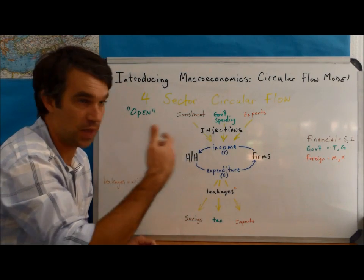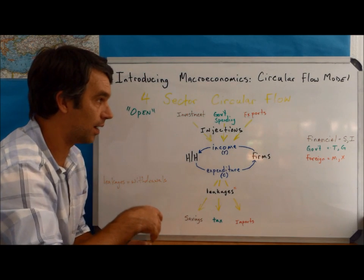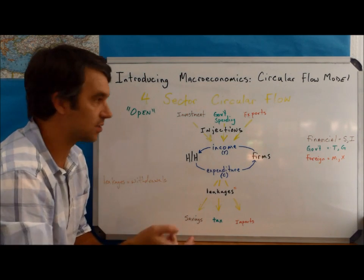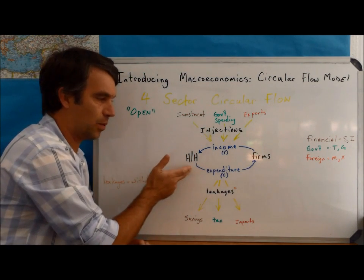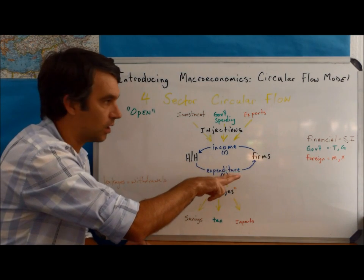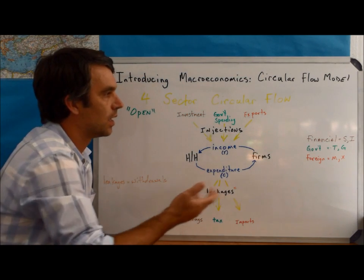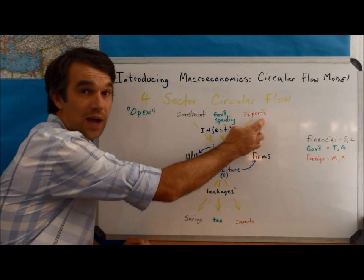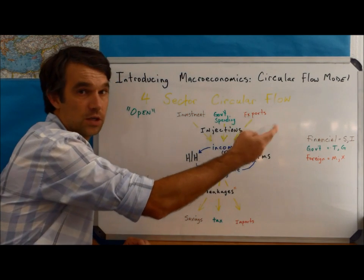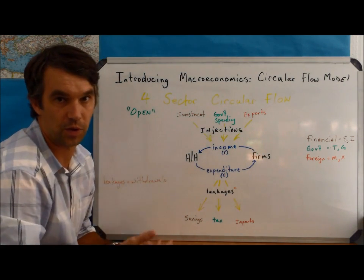When the government spends money to pay teachers or to build roads or to pay politicians, again, those people in their private lives are households. That money is going to turn into expenditure. So it's an injection into the circular flow. Likewise, when people from other countries are buying your goods and services, that money comes into the circular flow that we're concerned with.